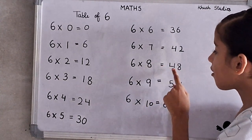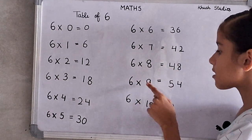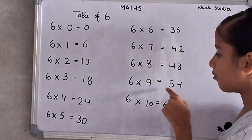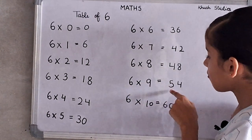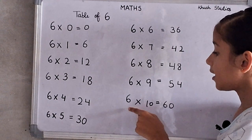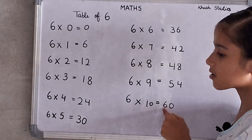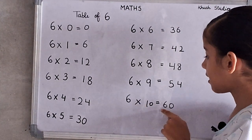6 eights are 48. 6 nines are 54. 6 nines are 54. 6 tens are 60. 6 tens are 60.